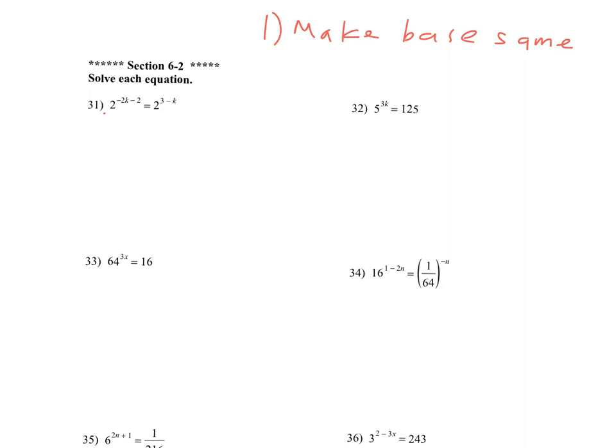So the bases is kind of what's holding up the exponent. So on number 31 you can see that these bases are already the same. So that one's going to be, that step one's already done for us. But on number 32 you can see this base is 5 and then this base is 125. So those bases are not the same. We're going to need to make them the same and I'll show you how to do that. Step two is that once you get those bases the same, you can set the exponents equal to each other and then solve.